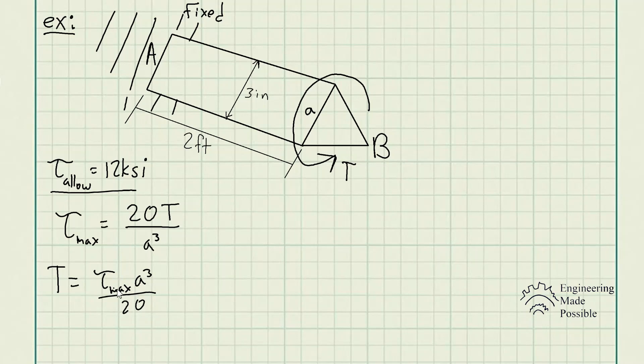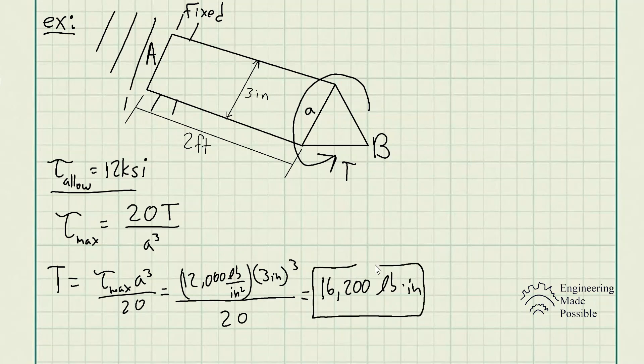We know that the maximum is the allowable. This is the most that we could experience of this shaft due to the material. So we just plug in the dimension as well as this allowable shear stress to solve accordingly for the torque that can be applied to the shaft. The maximum torque that can be applied to the shaft is 16,200 pound inch.